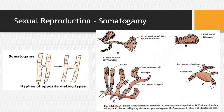The diagram shows somatogamy. As mentioned, in highly evolved fungi there are no sex organs. Two types of hyphae — of compatible mating types — come into contact, a nucleus transfers from one to the other, and the entire mycelium becomes a dikaryotic mycelium containing nuclei from two different hyphae. The dikaryotization process is shown in the diagram — the nuclei remain in dikaryotic stage for a long time without fusing. Finally, special structures form and karyogamy occurs in higher fungi.